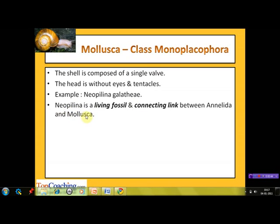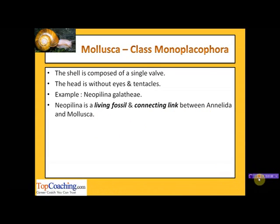Neopilina lived during the Cambrian period and is considered a connecting link between Annelida and Mollusca because its body shows true segmentation or metamerism, which is a characteristic feature of Annelida. The body is segmented and has repeated nephridial units. Also, the body is covered with a shell, which is a unique feature of phylum Mollusca. Therefore it is considered a connecting link between Annelida and Mollusca.